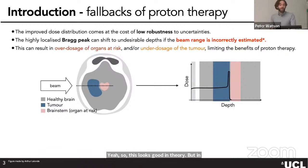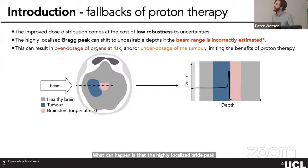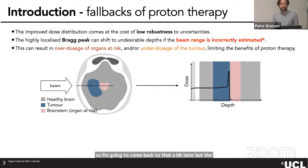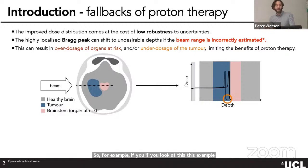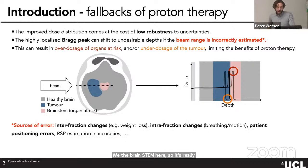This looks good in theory but in practice it's difficult. The improved dose distribution comes at the cost of lower robustness to uncertainties. The highly localized Bragg peak can shift to undesirable depths inside the patient if you incorrectly estimate the beam range. This can cause overdosage of organs at risk or underdosage of the tumor — for example, if the beam falls short, you underdose the tumor; if it goes too far, most dose hits the brainstem.